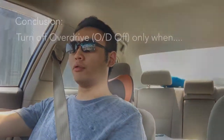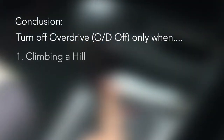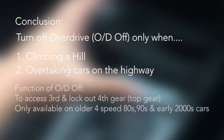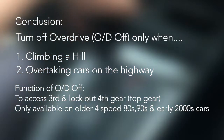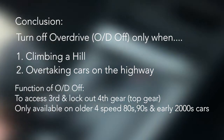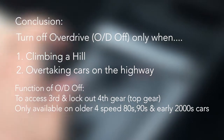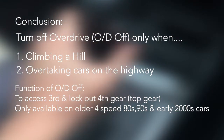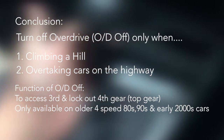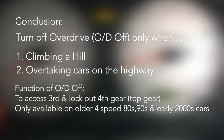In overall conclusion, the overdrive function should be turned off only when you're climbing a hill or overtaking someone on the highway temporarily. The function of overdrive off is to access third gear. This is a very short topic because this function is getting more and more defunct — it's only applicable if you're driving an older car with that sort of gear shifter.